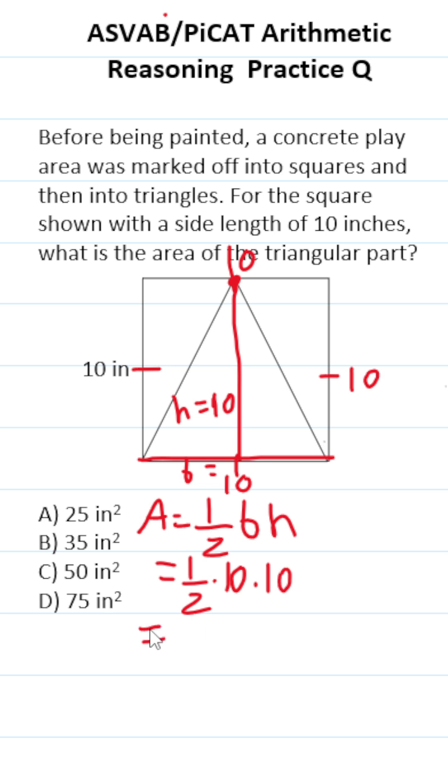And you have a few options as to how you can proceed here. You could do one-half times 10, which is going to be 5. 5 times 10 is 50. So the area of this triangle is 50 square inches, which is answer choice C.